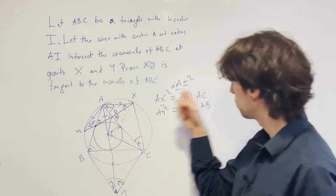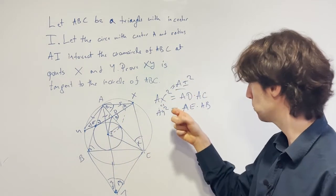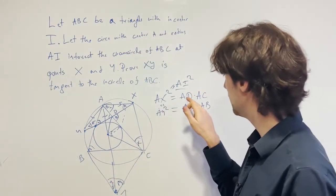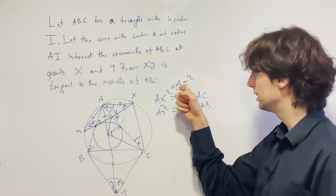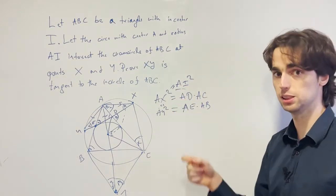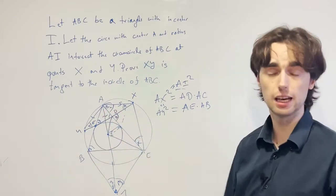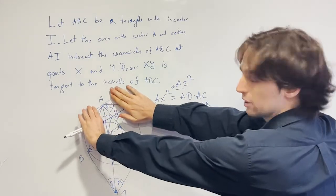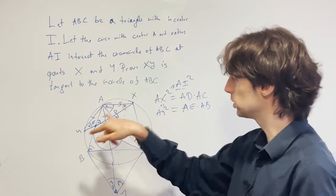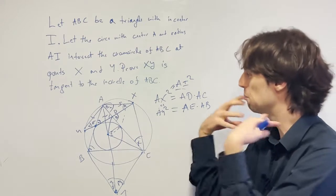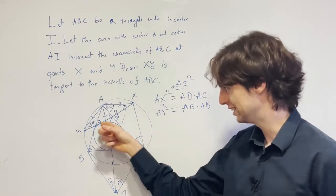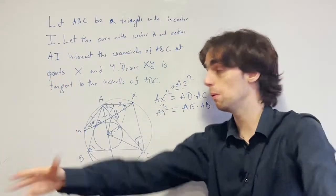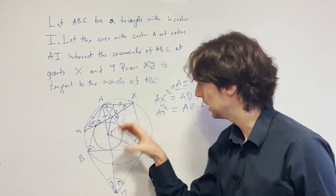But now, when we take advantage of this fact that AI squared is AD times AC, this is also important. This uniquely defines points D and E. Right? This condition right here, AI squared is AD times AC, that uniquely defines the points D and E. And also this condition right here. And so we can forget about X and Y completely and just focus on D and E. Because it's much closer, it has much more to do with this tangency condition. X and Y seem a bit more distant, more far apart. And that's why it's important to focus here.